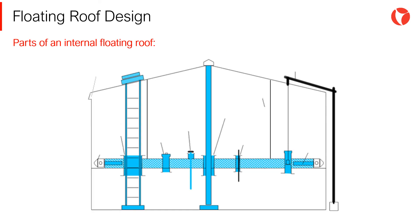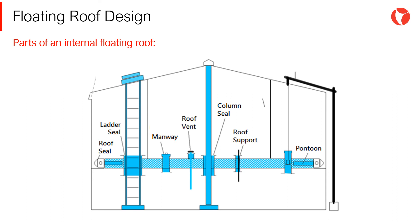The main parts of an internal floating roof are: the floating device — in this case the pontoon; the seals with the elements of the tank such as the shell, ladders, and columns; the roof manway; the roof vent; the roof supports; the supporting wires if needed; and the flotation level and vents.